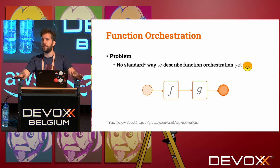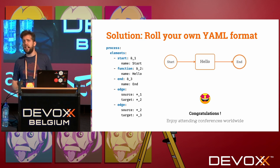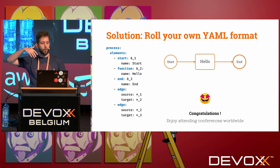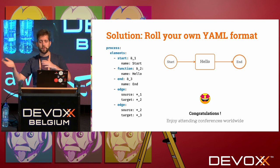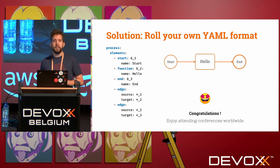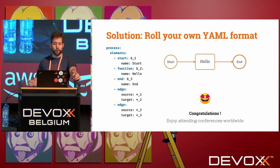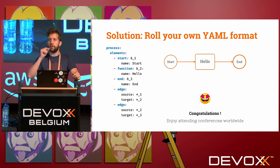There's some effort to standardize but no universal standard yet. One thing you could do is roll your own YAML format — define a workflow with its elements: the start, the functions, the end, and the edges connecting them. Once you've come up with your own solution, congratulations — you can attend conferences worldwide with your very own serverless workflow description in YAML.